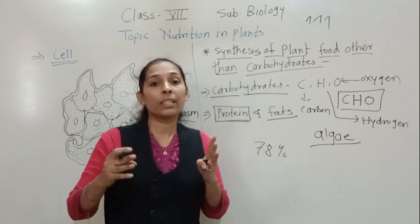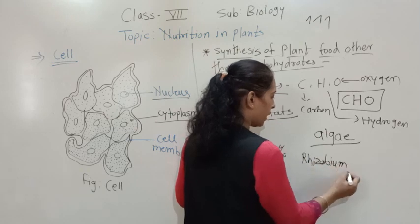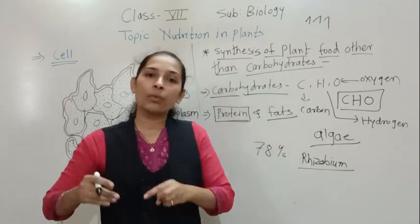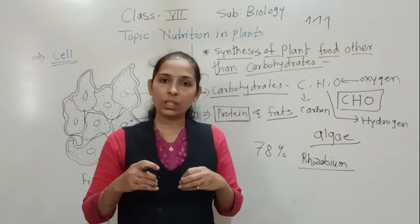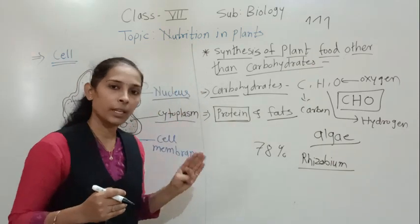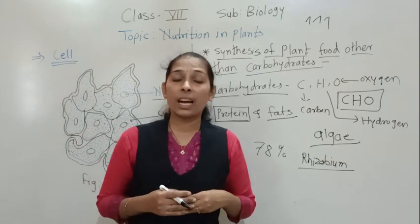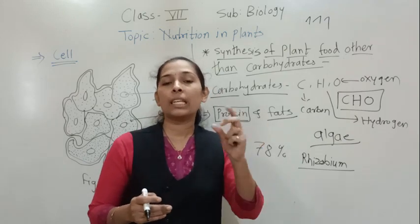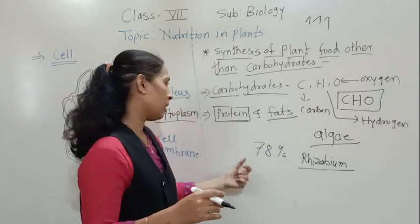Then how do plants get the nitrogen? There are certain bacteria, and the name of that bacteria is Rhizobium bacteria. This Rhizobium bacteria absorbs the atmospheric nitrogen and converts it into a soluble form, then mixes it into the soil. When this soluble nitrogen gets mixed into the soil along with water, the plant absorbs that nitrogen. In this way, plants can get the nitrogen to synthesize proteins. Also, some farmers apply fertilizers to their crops, because fertilizers are also rich in nitrogen, and with the help of fertilizers, plants can also get the nitrogen to synthesize proteins.